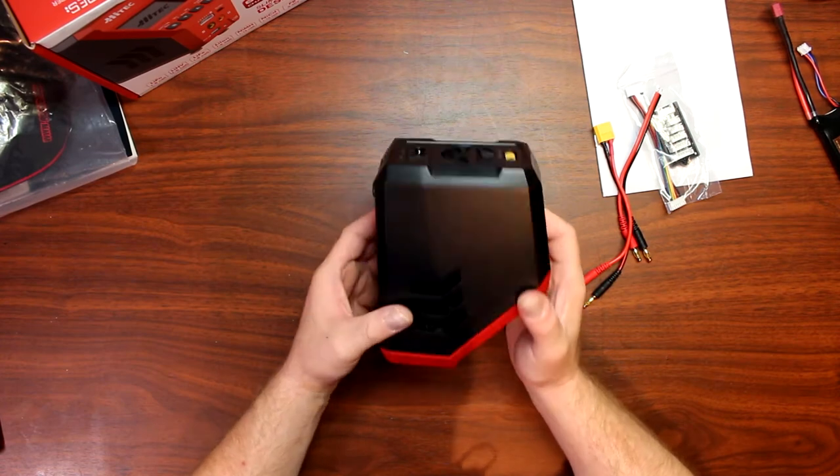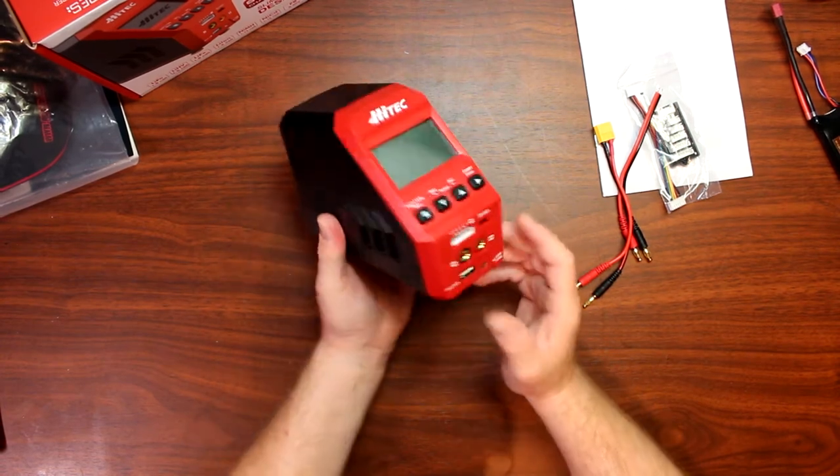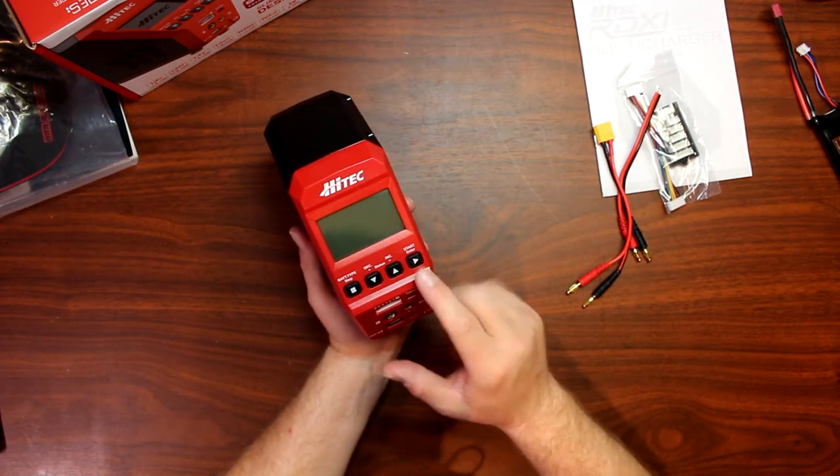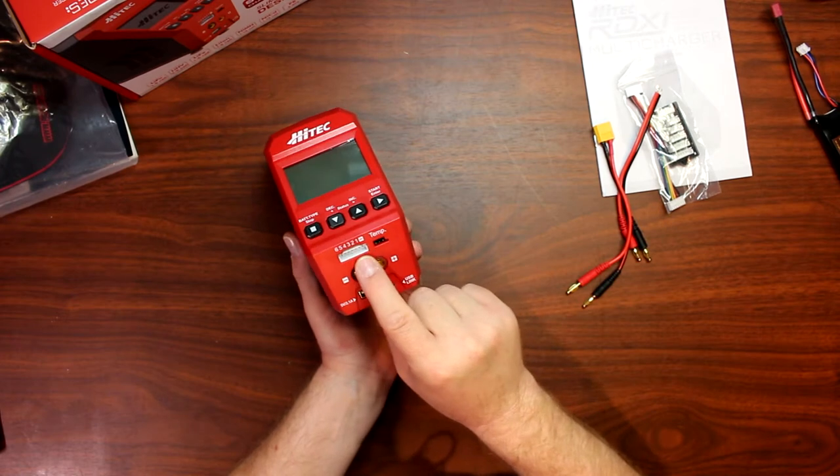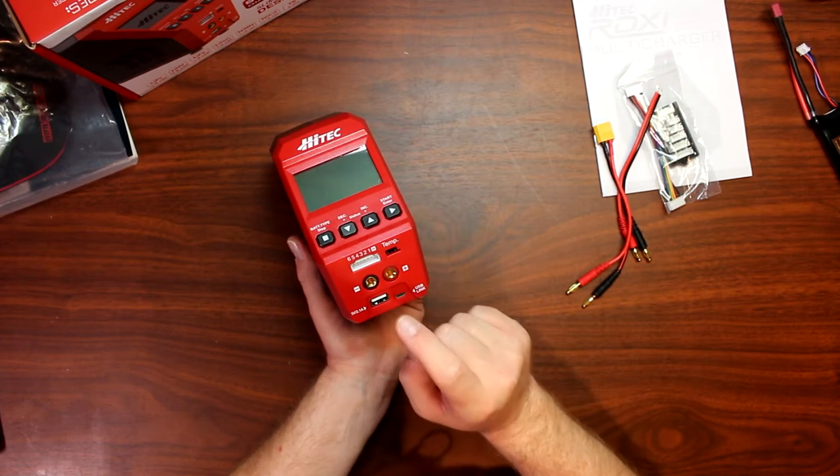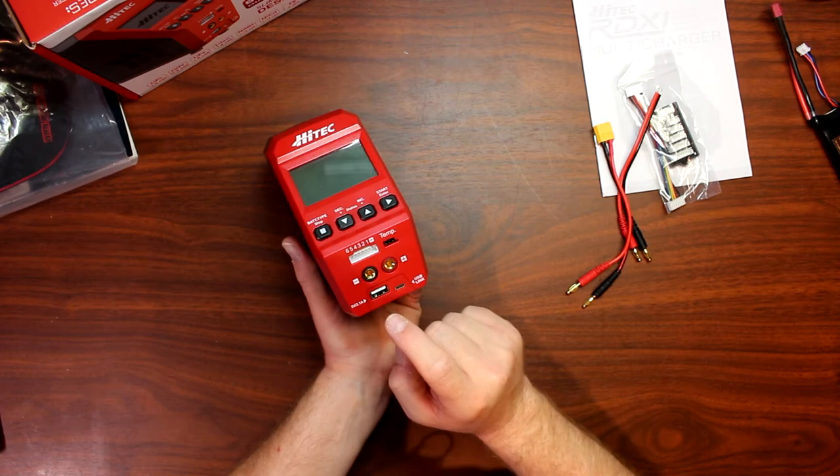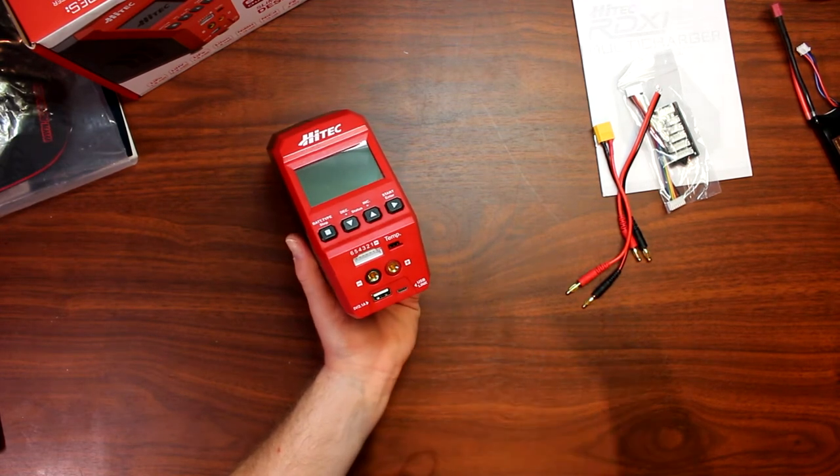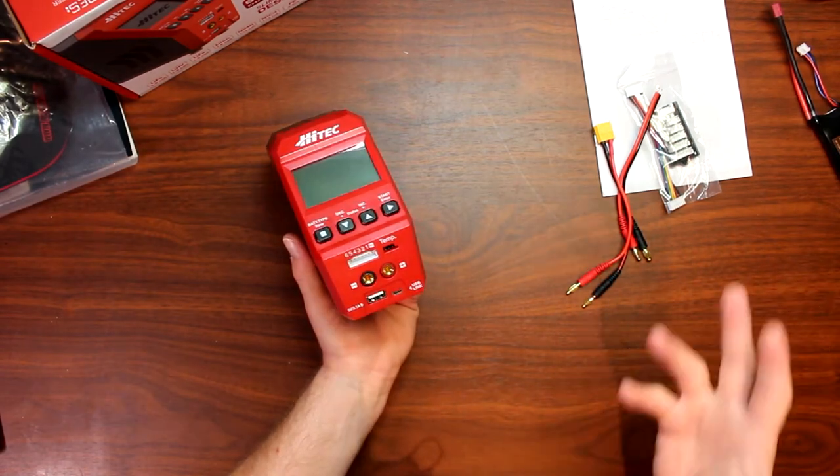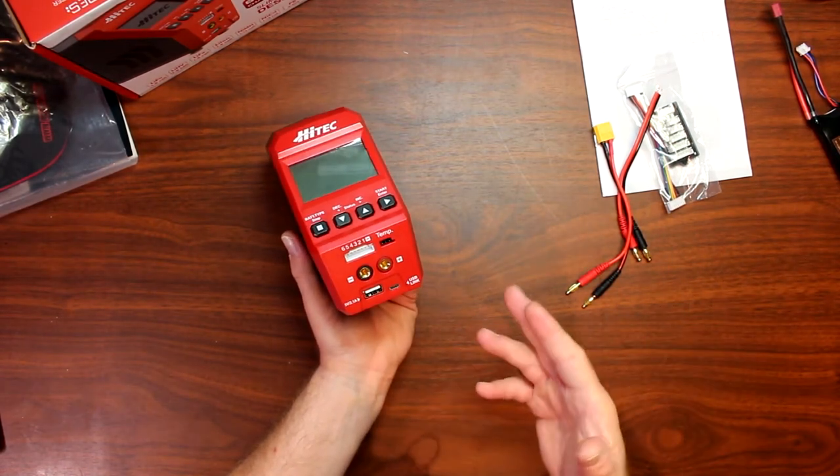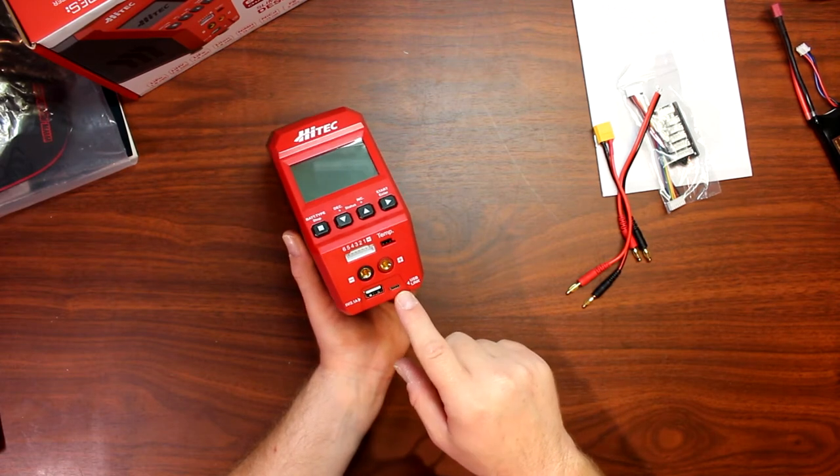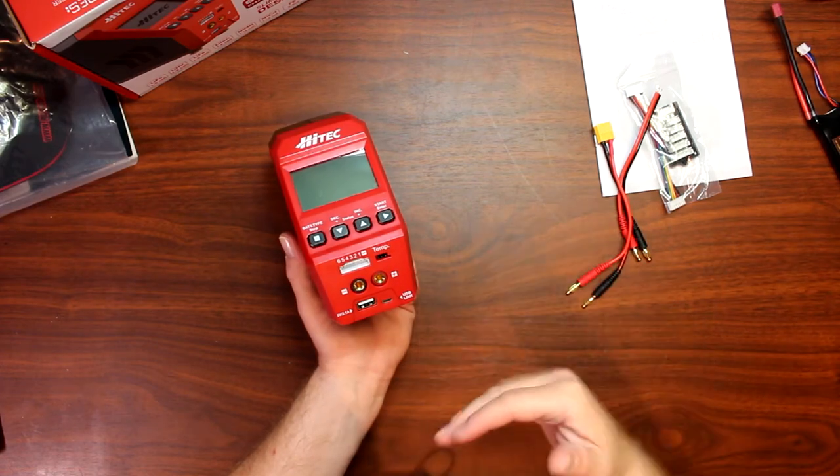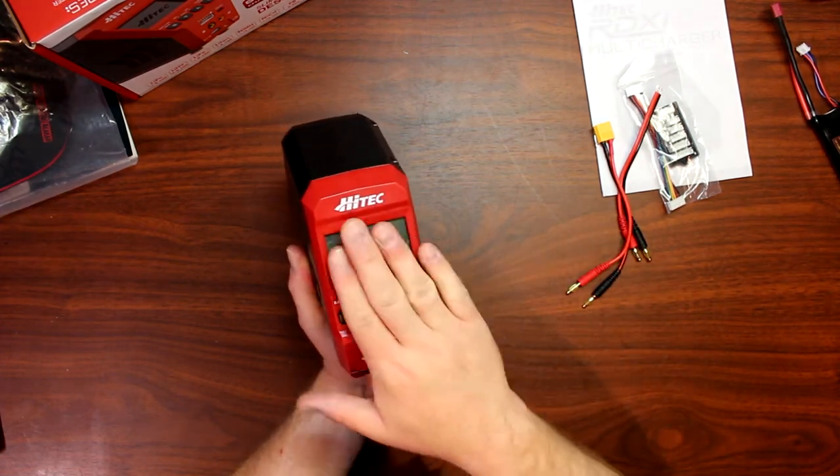It is a slim design. Let's show the features on the charger itself. On the front you'll have your main four buttons to access the menu inside. You have your balancing port, your temperature port, your main charging output. You have a USB that's 5 volt, 2.1 amp high current charging to be able to charge your phone, your tablet, whatever you want to charge, as long as it's USB. And you have the USB link. Basically you plug in the USB here to your computer, download the software from Hitec, and you'll be able to have the same information on your screen on your computer.